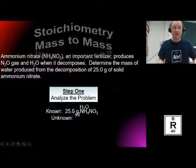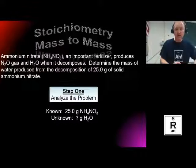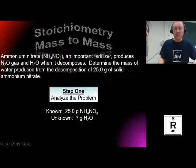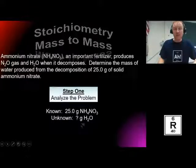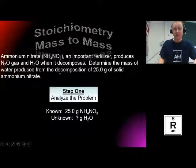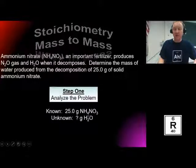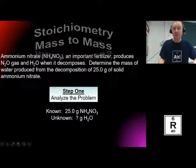The first thing we've got to do is analyze the problem. We take a look at word problems and note: what do you have? We've got 25 grams of ammonium nitrate. And what do we need to find? That's our unknown — determine the mass of the water. Since I have one molecular compound and I'm converting to another, I need a balanced equation. This is where stoichiometry comes into play. So let's get that balanced equation.